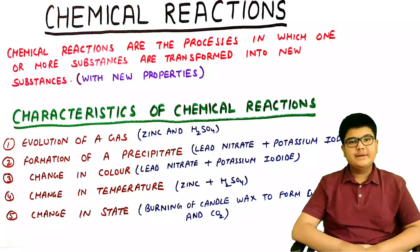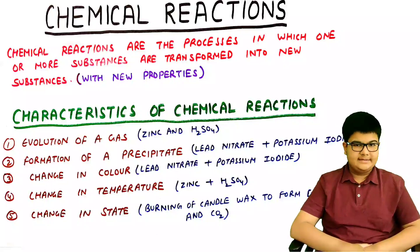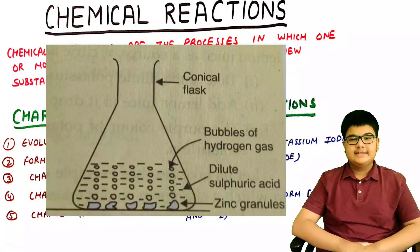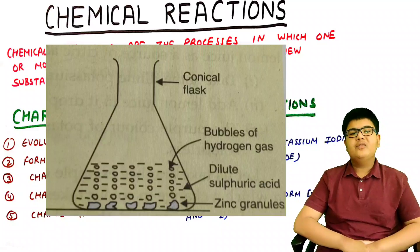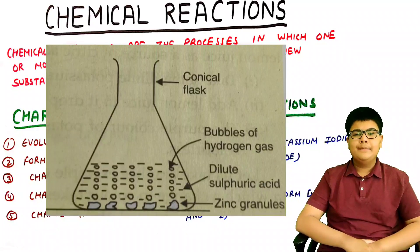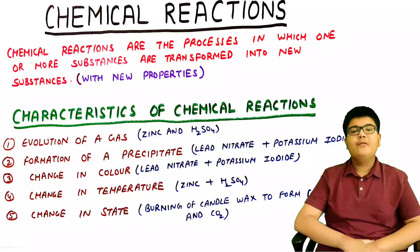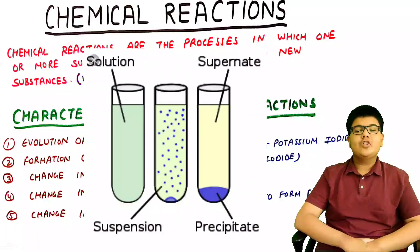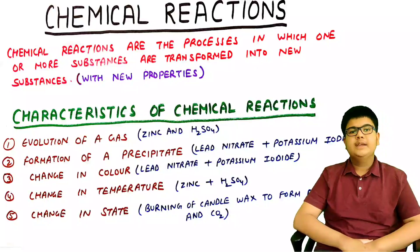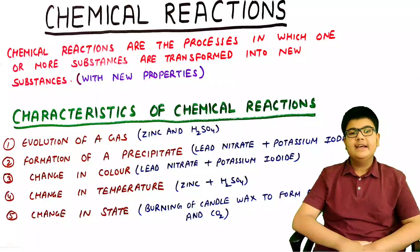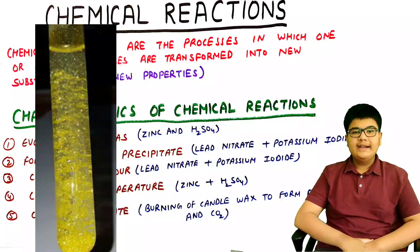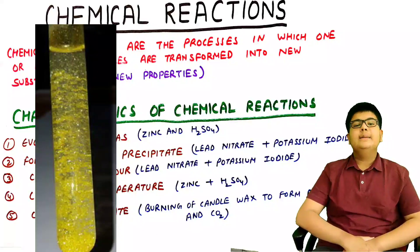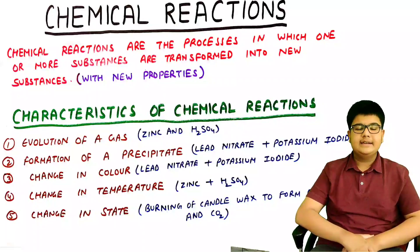For example, the reaction between zinc and sulfuric acid. If we take zinc granules in a conical flask and add dilute sulfuric acid to the flask, we observe that bubbles of hydrogen gas are formed. Second, formation of a precipitate. A precipitate is any insoluble solid formed after a chemical reaction. For example, the reaction between lead nitrate and potassium iodide produces a yellow precipitate of lead iodide, and potassium nitrate is also formed in aqueous solution.